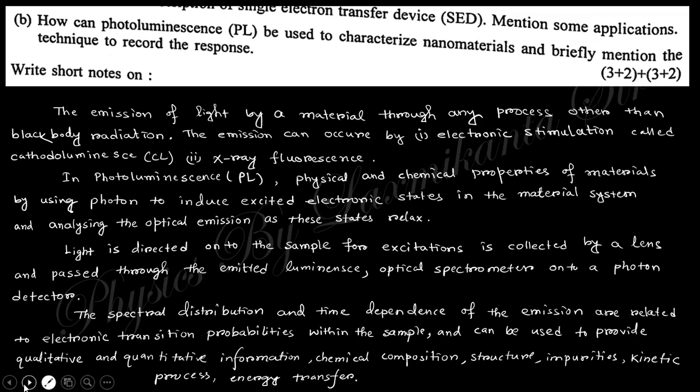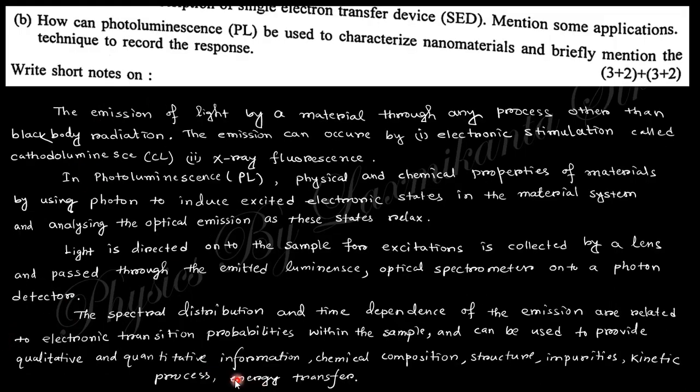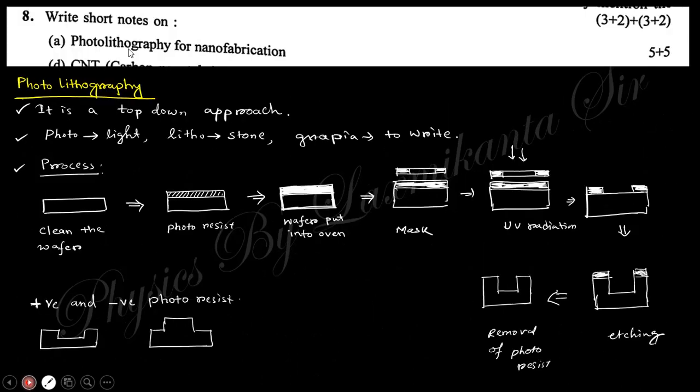Photoluminescence is when you incident a photon or light on this material, its electronic state will be changed and it radiates. This radiation information gives you information about the material. These two paragraphs are written here - you can just note down this paragraph and easily write the answer to this question. Next question: write short notes on photolithography for nanofabrication.